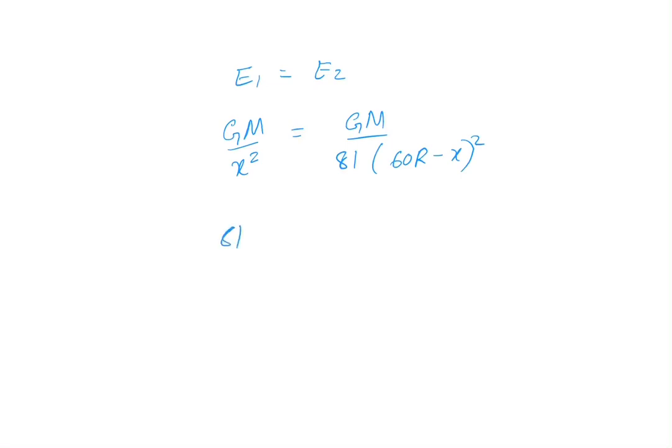So 81(60R - x)² = x². Take root on both sides, so here we will get... 9. Square root of 81 is 9, times (60R - x) is equal to x.